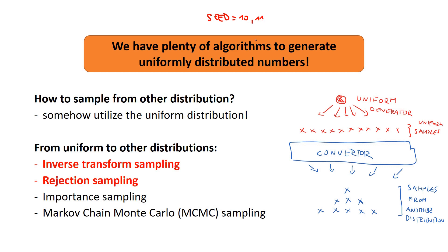If someone else uses seed 11, they'll get completely different random numbers, but again if done enough times it's consistent. Now the great question is: we can get uniformly distributed numbers, but what if we don't want uniform numbers? What if we want numbers distributed according to, say, an exponential distribution or any more complex distribution? Can we utilize these uniform samples to obtain samples from a more complex distribution?